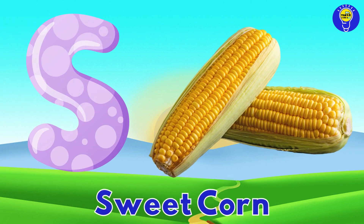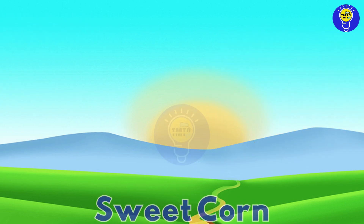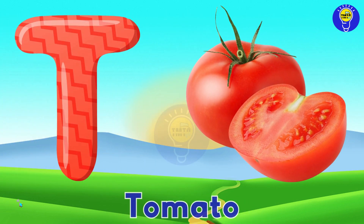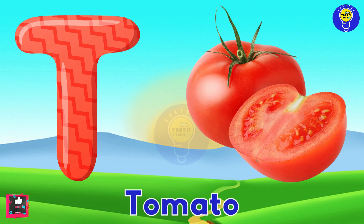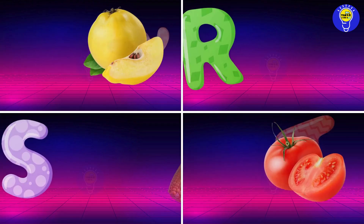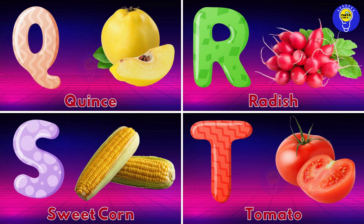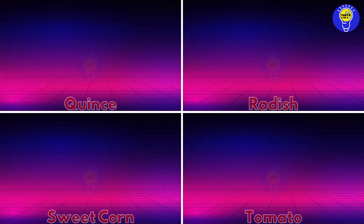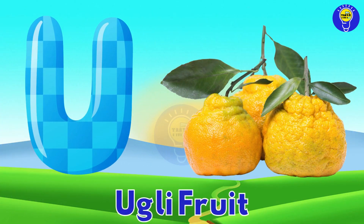S is for sweet corn, sweet corn. T is for tomato, tomato. U is for ugly fruit, ugly fruit.